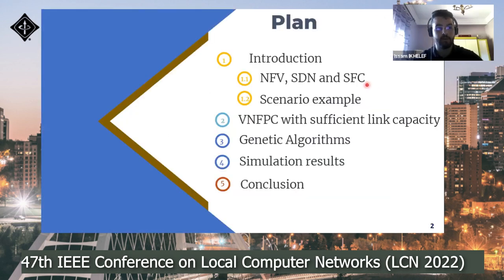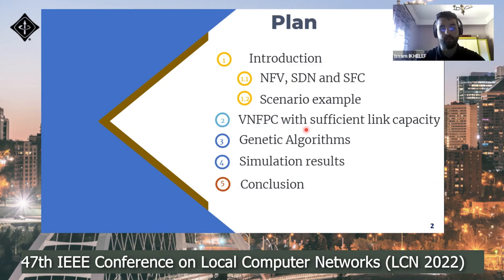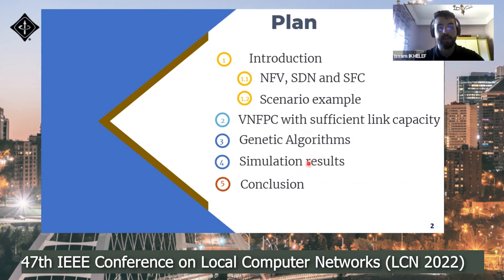We start by introducing the generic problem and giving some definitions of NFV and SFC. Then I will give a scenario useful to understand the problem. After that, I will present a variant of the problem — the VNF-PC — which assumes sufficient link capacity of the virtual network compared to traffic demand. Then I will show the exact ILP solution and describe our genetic algorithm-based proposal. Results validating our proposal are presented before concluding.